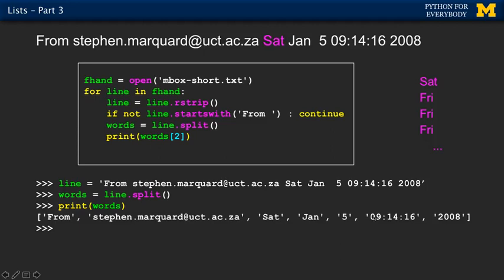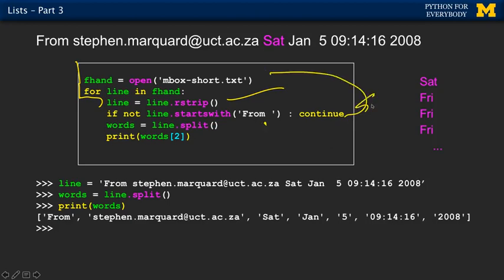Here's an example of how we would use split as we parse mail data. We're going to do a lot of parsing of mail data. Again, these lines you'll get used to: open the file, loop through the file, strip the white space off the right-hand side. Check to see if the line starts with 'from ' — if it doesn't, continue. This is the skip code — skip lines we're not interested in. And then we're going to split it.